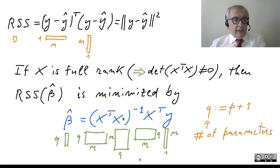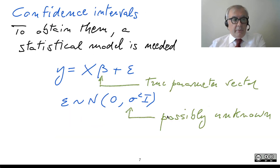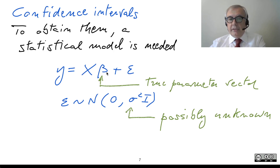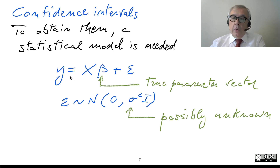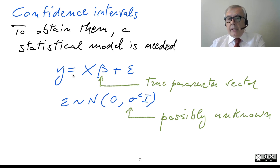You can see that beta-hat depends on Y, and Y equals some deterministic quantity — beta is unknown but deterministic — plus a random vector epsilon. So Y is random, and beta-hat, depending on Y, is random as well. Therefore, it has a variance matrix that can be computed.